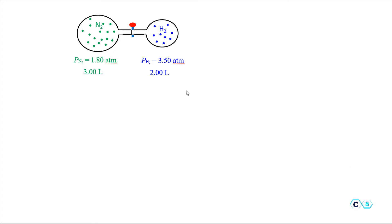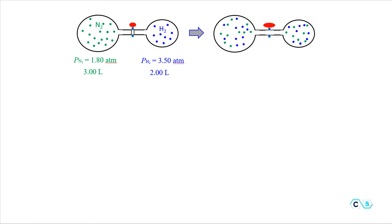What would be the final pressure if we open the valve separating 3 liters of nitrogen at 1.8 atmospheres and 2 liters of hydrogen at 3.5 atmospheres? If we open the valve, these two gases are going to mix and we're going to get a mixture of two gases.